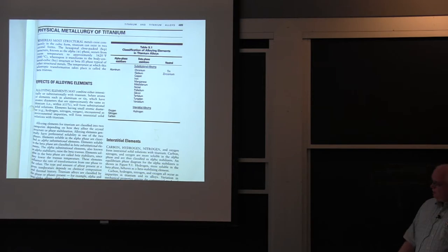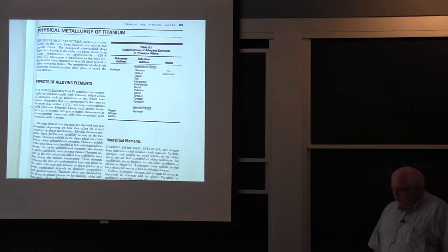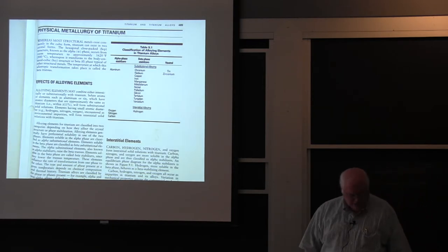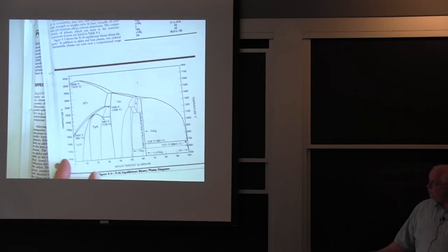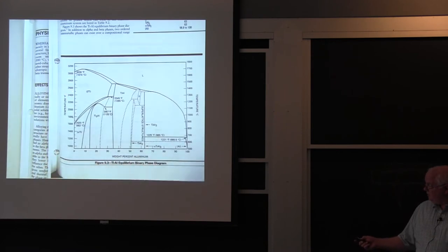You do get precipitation hardening varieties of titanium, but they're mostly used as sheet metal in the aerospace industry. You can dissolve lots of aluminum into titanium in the beta phase. Here's the titanium-aluminum phase diagram. This is the titanium side, and putting aluminum in stabilizes alpha. The more aluminum you put in, you can put a lot of them into beta phase.